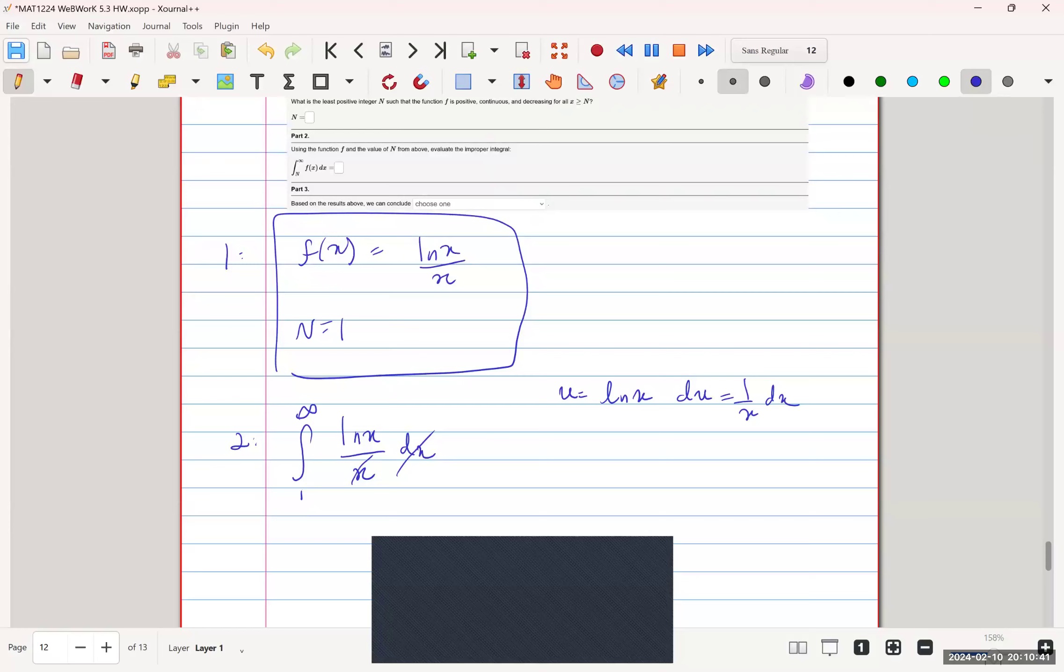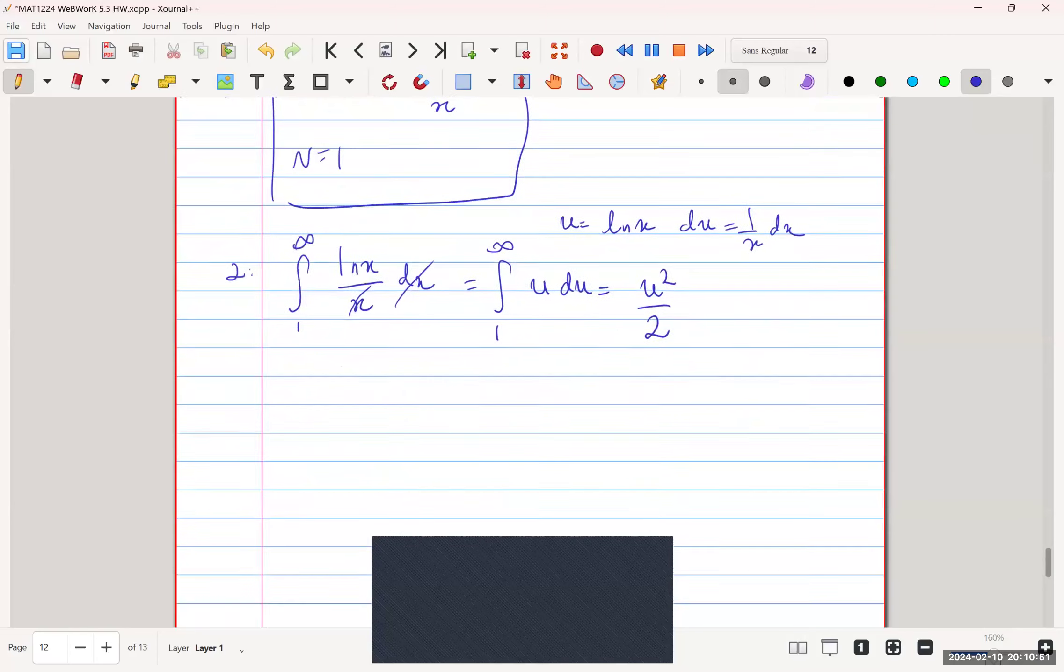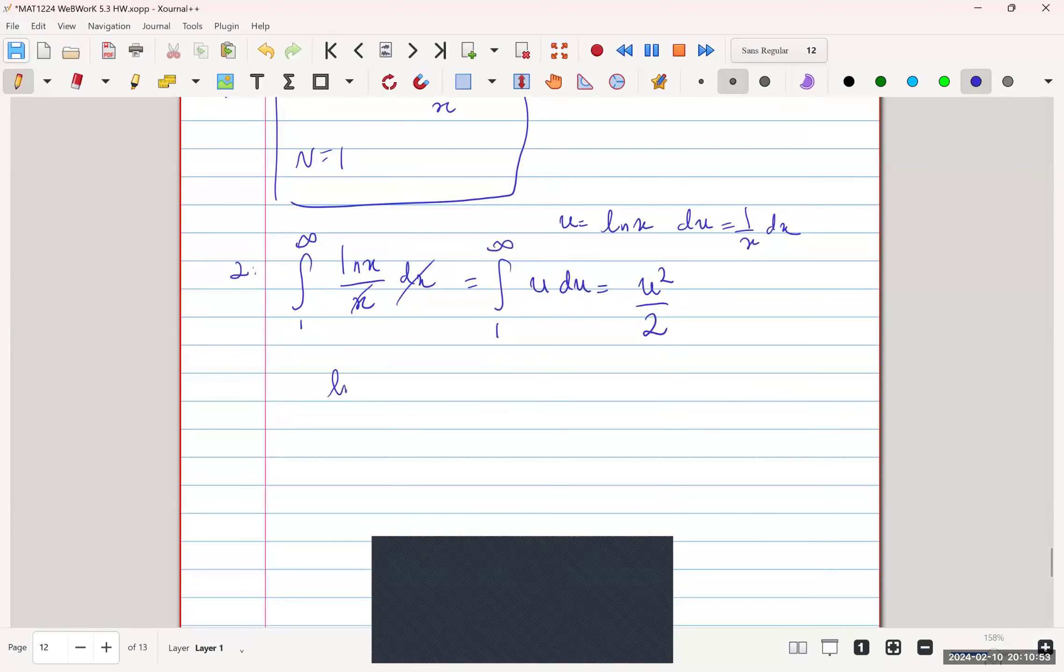Just leaves us with ln(x), which is just u. So u du, which is equal to, power rule, u squared over 2. Plugging back in our ln(x): ln(x) squared over 2, from 1 to infinity.